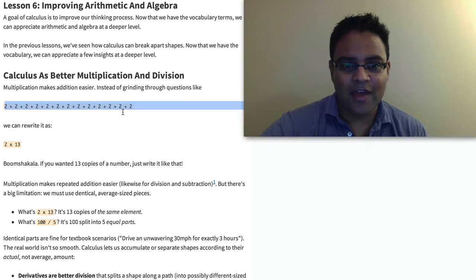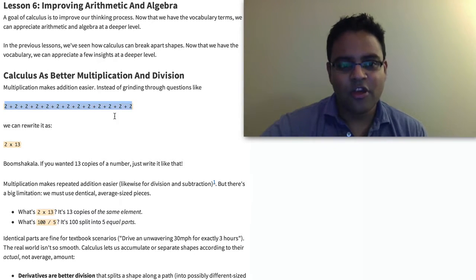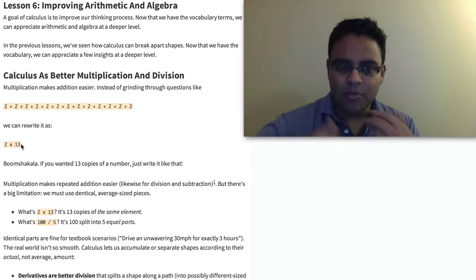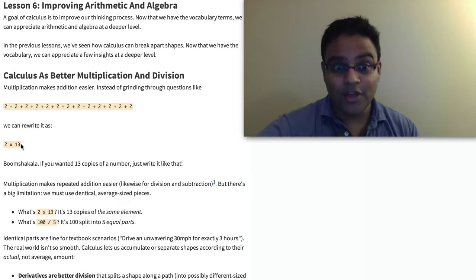As you're probably aware, multiplication makes arithmetic a lot simpler, specifically addition. So instead of having to add a giant column of numbers, we can actually represent it in a simpler format, like 2 times 13, and solve that really quickly. Multiplication makes repeated addition simpler to read and understand.